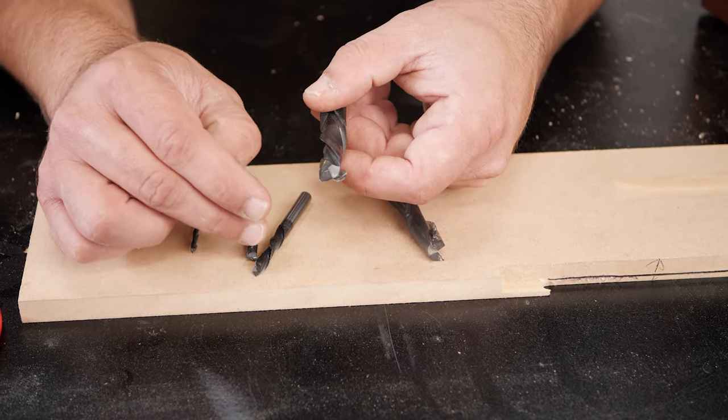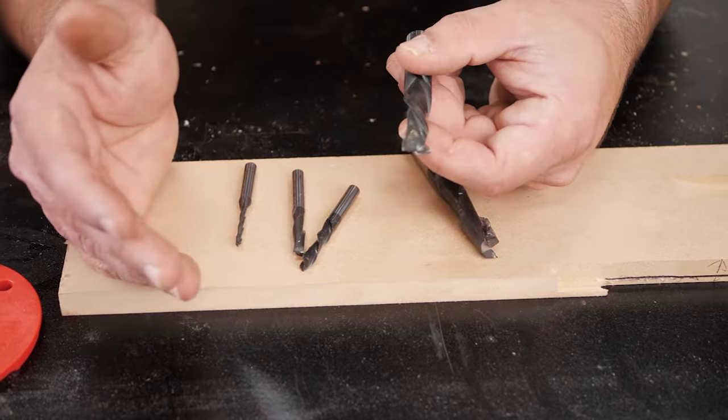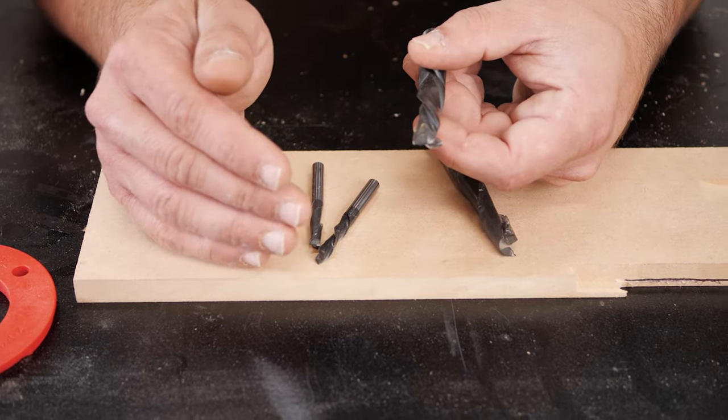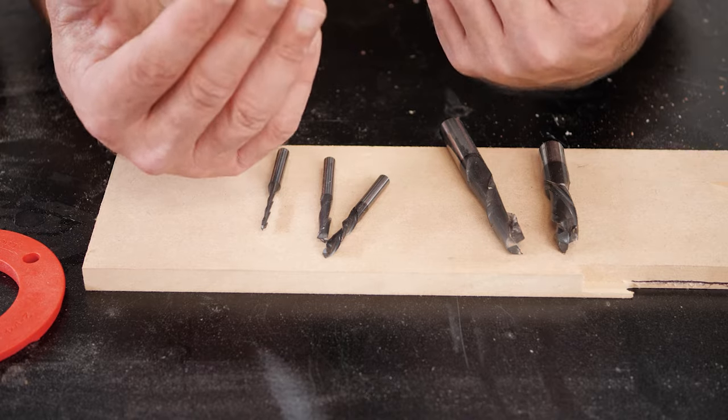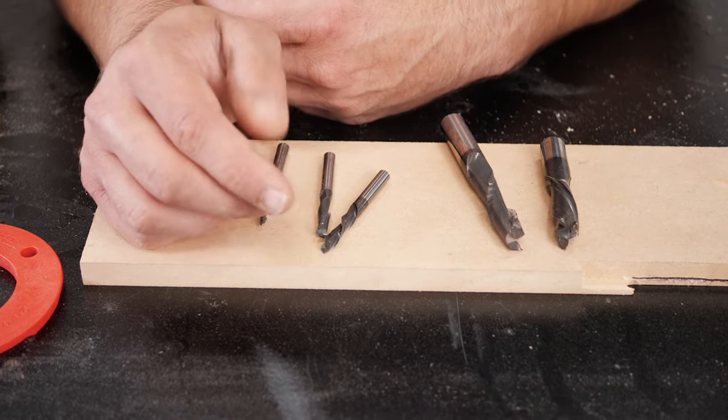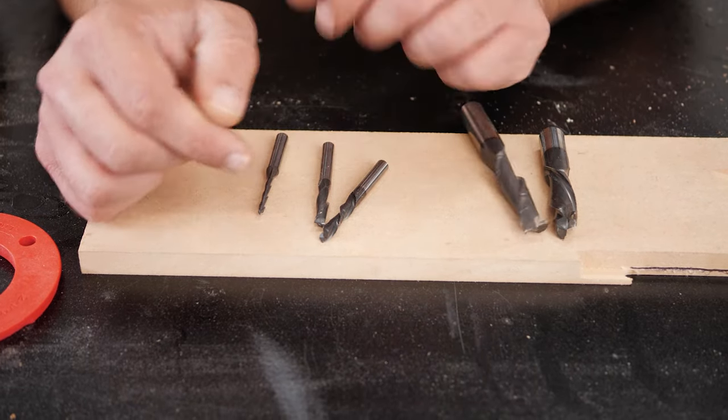An up cut bit is great for shallower passes where you're not going all the way through because it's going to bring chips up. However, if you are going through, it's going to give you a better finish on the bottom of the board.